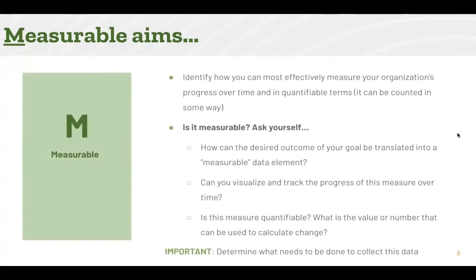The measurable component of your AIMS identifies how you can most effectively measure your organization's progress over time in quantifiable terms, meaning it can be counted and tracked in some way. When considering whether your AIMS is measurable, you can ask: how can the desired outcome of your goal be translated into a measurable data element? Can you visualize and track the progress of this measure over time? Is this measure quantifiable? What is the value or number that can be used to calculate change?